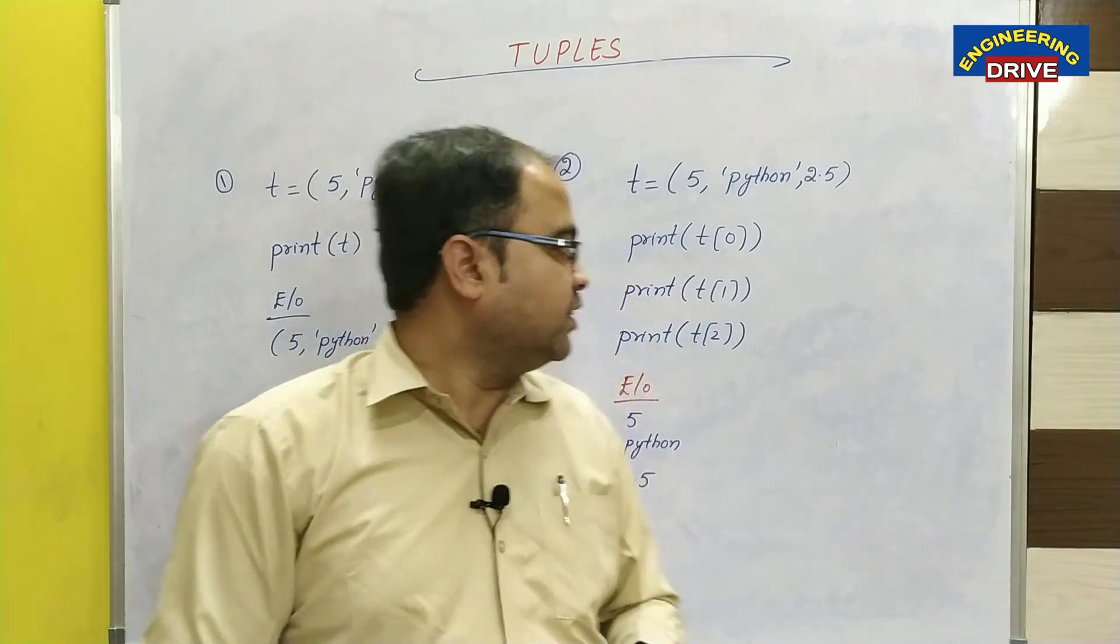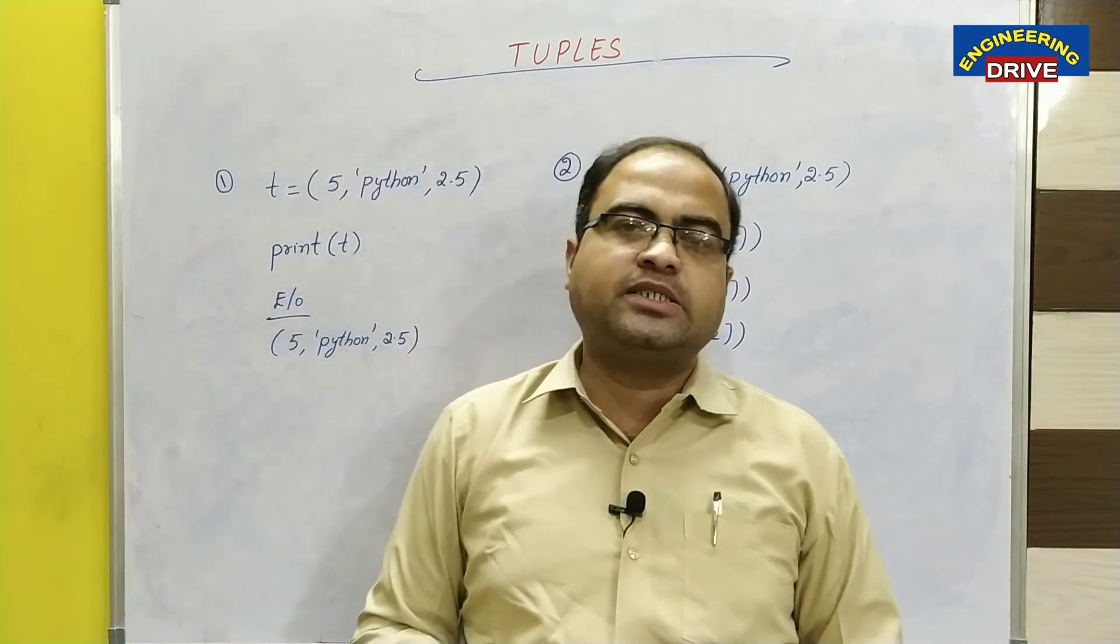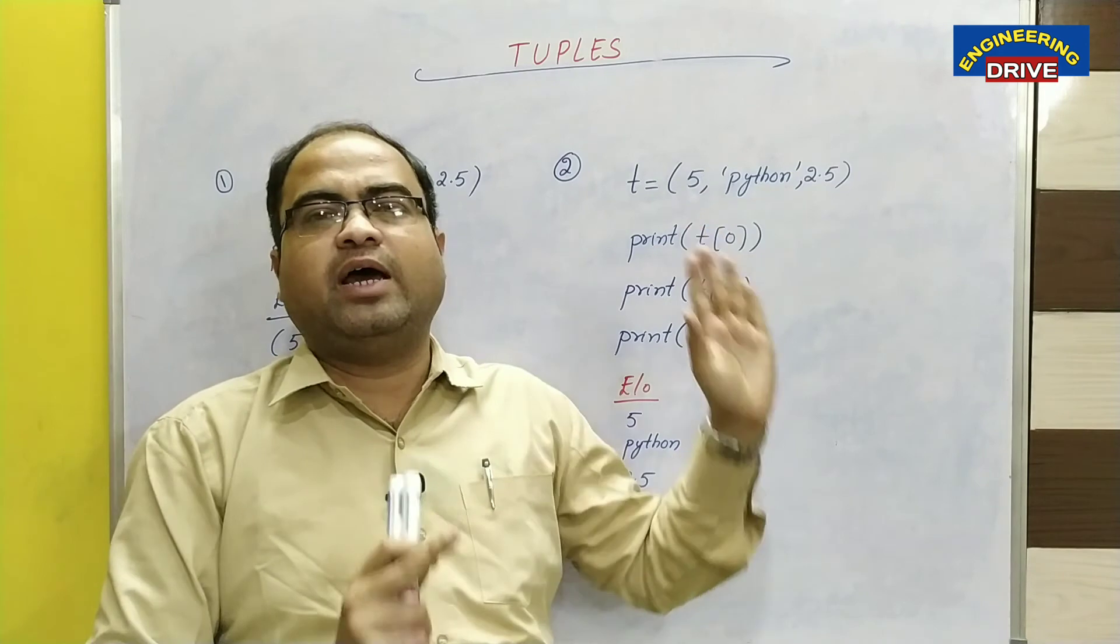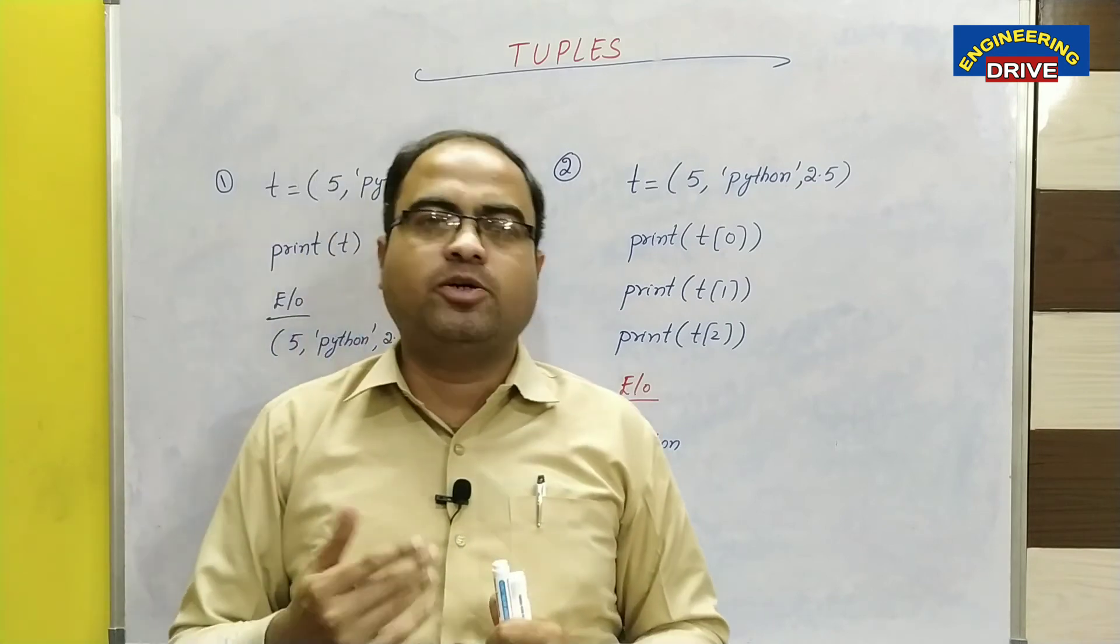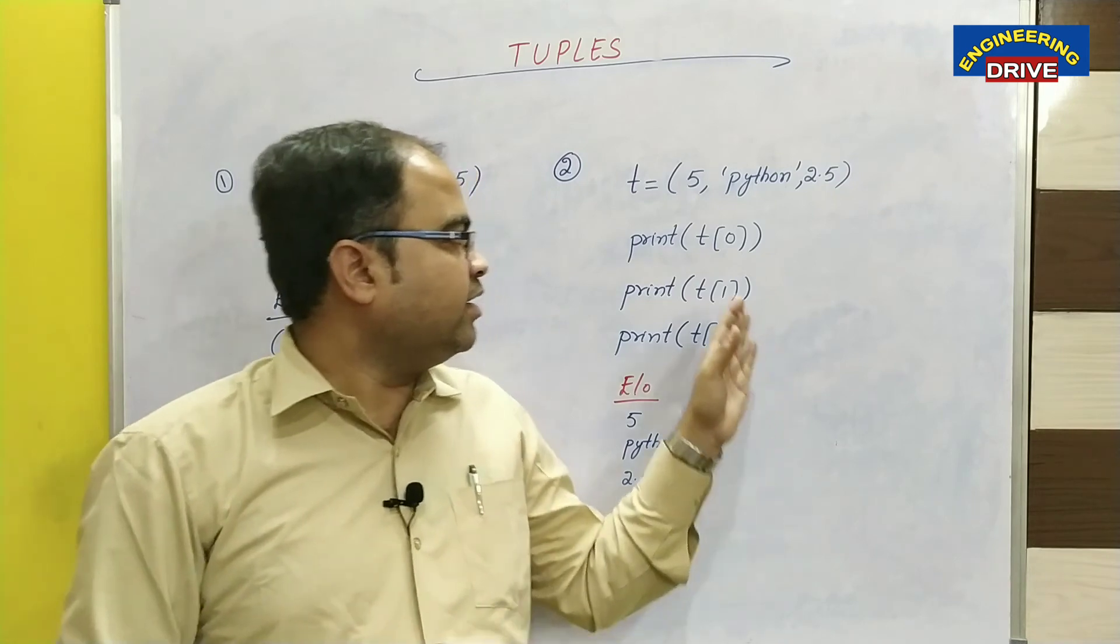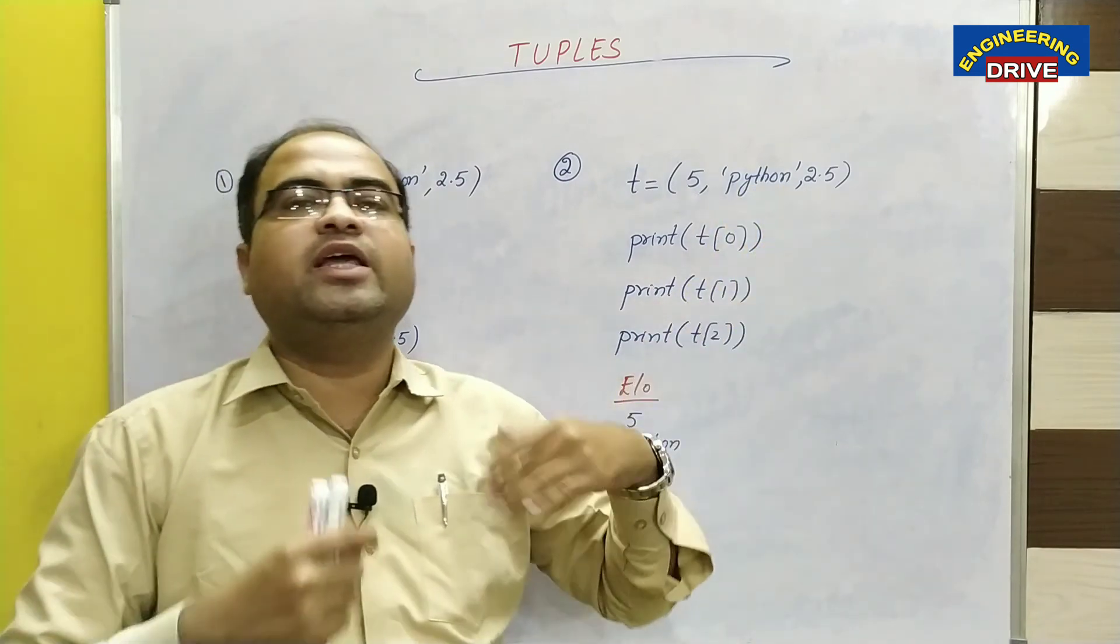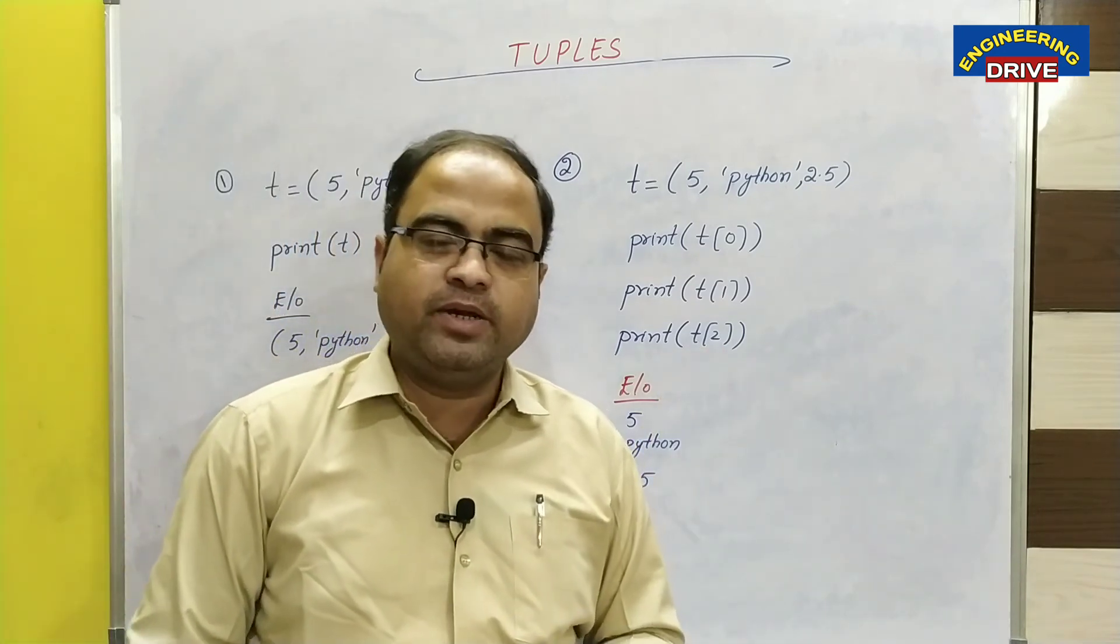And one more important thing is, the contents of the tuples cannot be changed. This is the major difference between the list and tuples. In list, we can change the contents, whereas in tuples, once you store the values, the values cannot be changed. Tuples are fixed set of items, whereas lists are changeable items in which you can change the items whenever you want. I have used the index 0 to display the first element, 1 to display the second element and 2 to display the third element. If there is a fourth element, then I can make use of t of 3 to display the fourth element inside my tuple.